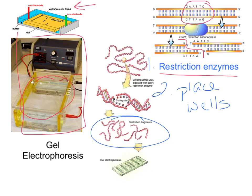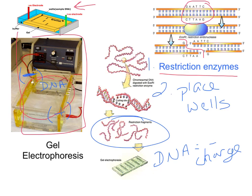We turn the machine on and it generates a negative end and a positive end — that's the electrical part. DNA has a negative charge. So if I've loaded my DNA at the negative end of the gel, negative and negative don't like each other, and the positive end is at the other end of the gel — negative and positive do like each other. So that generates the attraction, and the DNA with its negative charge starts moving towards the positive end and being repelled from the negative end.